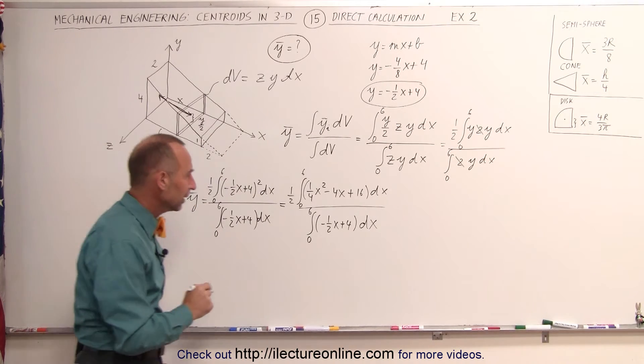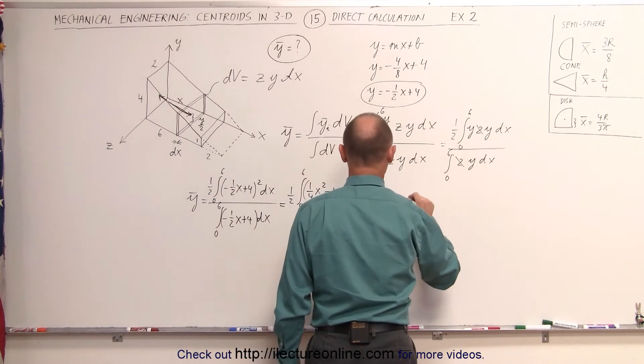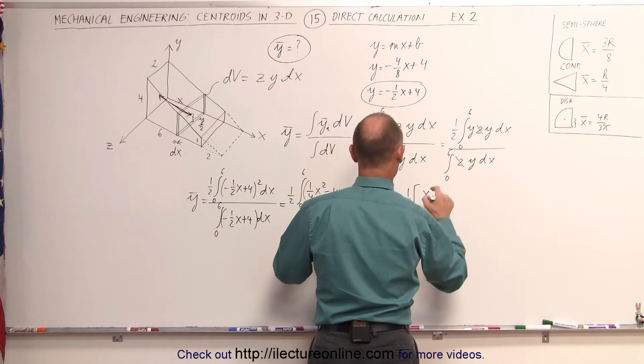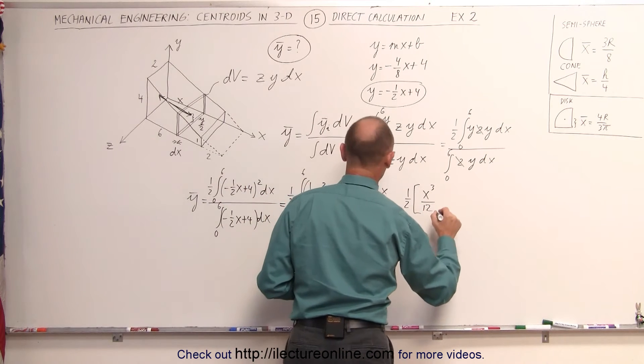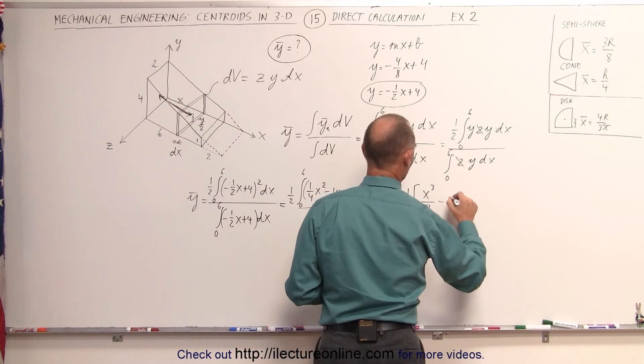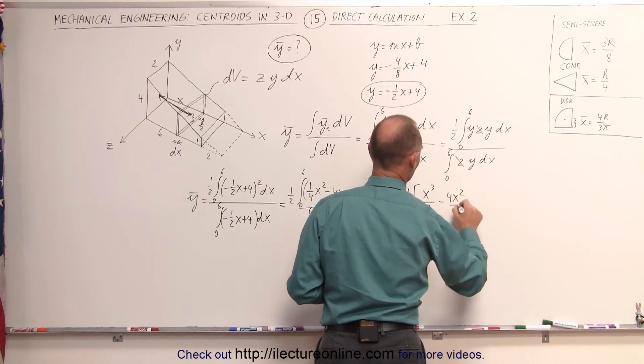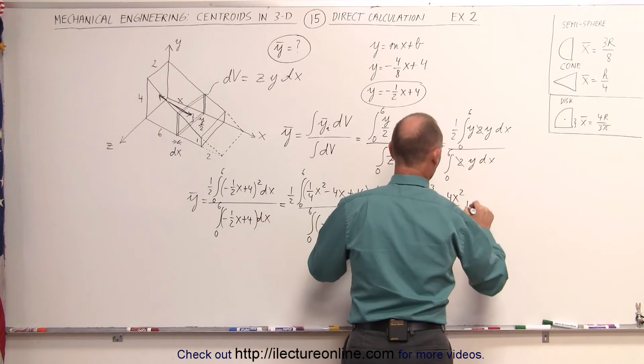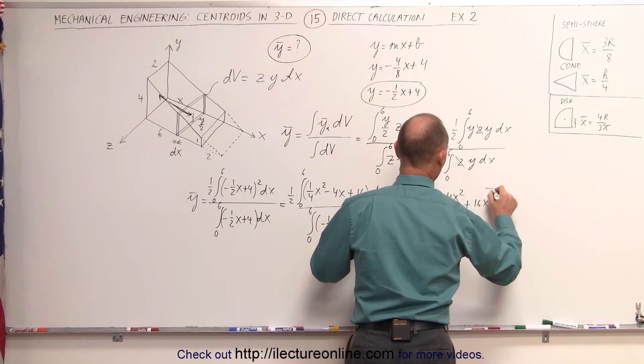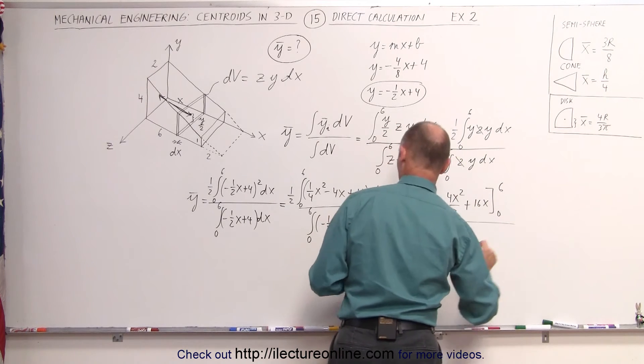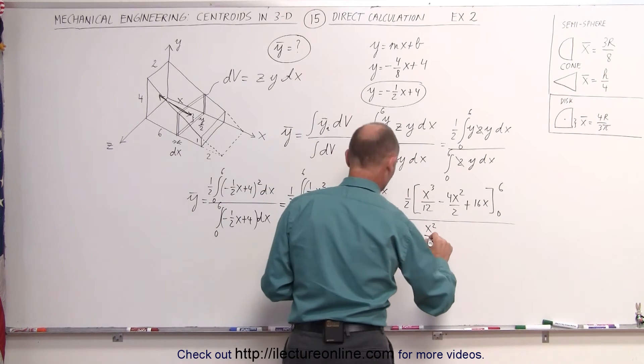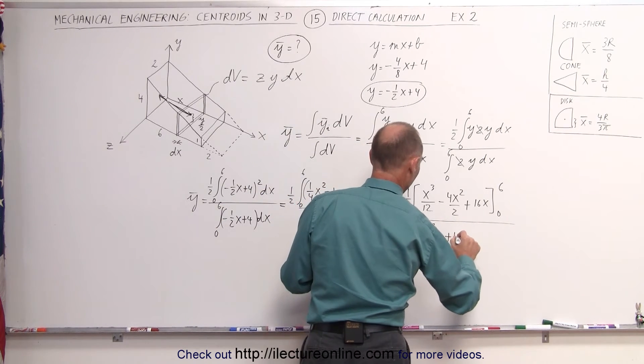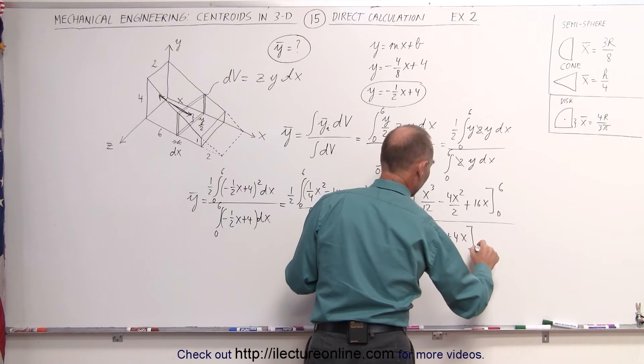This is equal to one-half times x cubed divided by 3 times 4, which is 12, minus 4x squared divided by 2, and plus 16x evaluated from 0 to 6. And the denominator, when we integrate this, we get minus x squared over 2 times 2, which is 4 and plus 4x, also evaluated from 0 to 6.